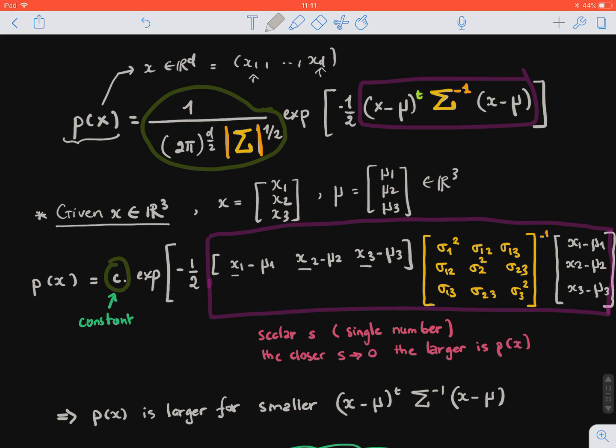So what we need to do first is compute the vector, the distance vector between x and μ across all dimensions, and we transpose it, so that's why you see it horizontal right here.